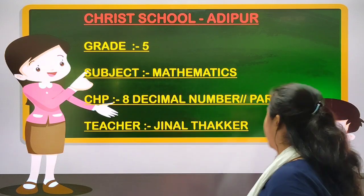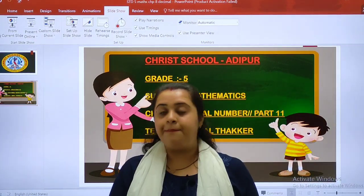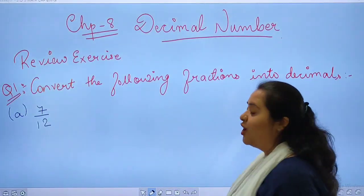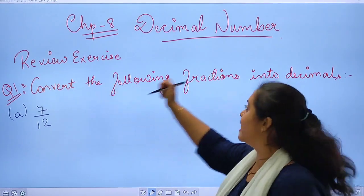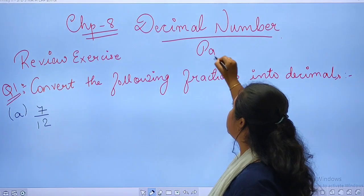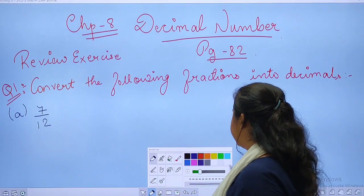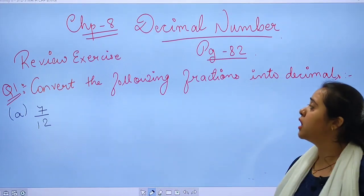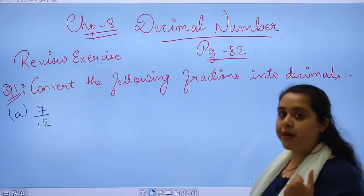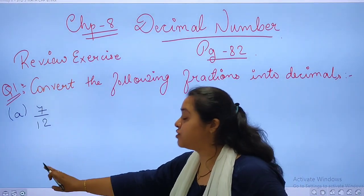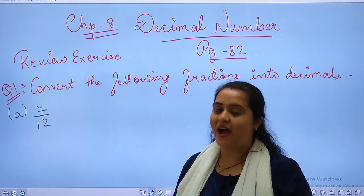So today in this video we are going to discuss our review exercise on page number 82 of your textbook. Chapter number 8, decimal number, review exercise on page number 82 of your textbook. So let's start with your first question. Convert the following fractions into decimal. Always remember when we are supposed to convert fractions into decimal, at that time we will divide.